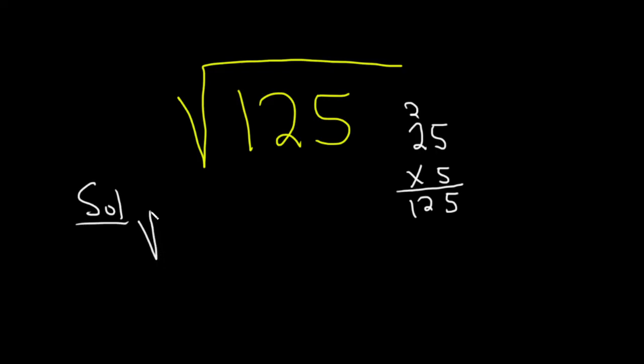We can take our square root of 125 and we can write it as the square root of 25 times 5, by basically just factoring it.